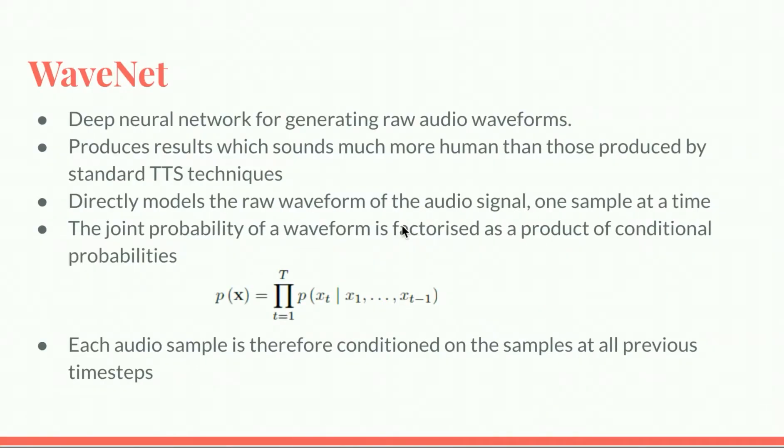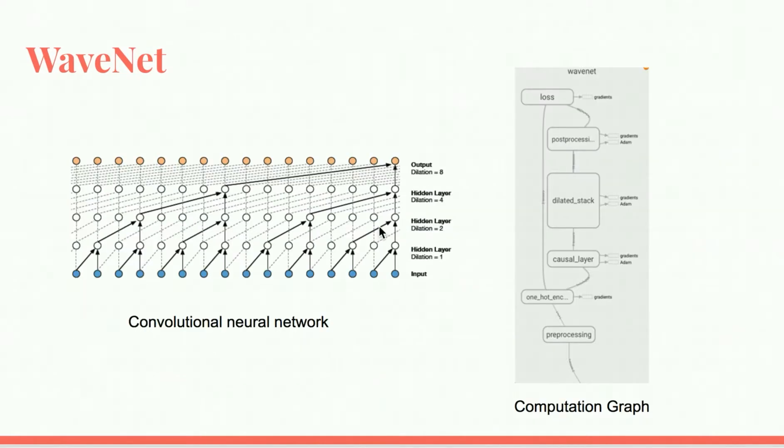We will be talking about WaveNet. Google's DeepMind has developed WaveNet, a deep neural network for generating raw audio waveforms. The WaveNet neural network architecture directly generates a raw audio waveform showing excellent results in text-to-speech and general audio generation. The model is fully probabilistic and autoregressive with the predictive distribution for each audio sample conditioned on all previous ones. Nonetheless, it can be efficiently trained on data with tens of thousands of samples per second of audio.